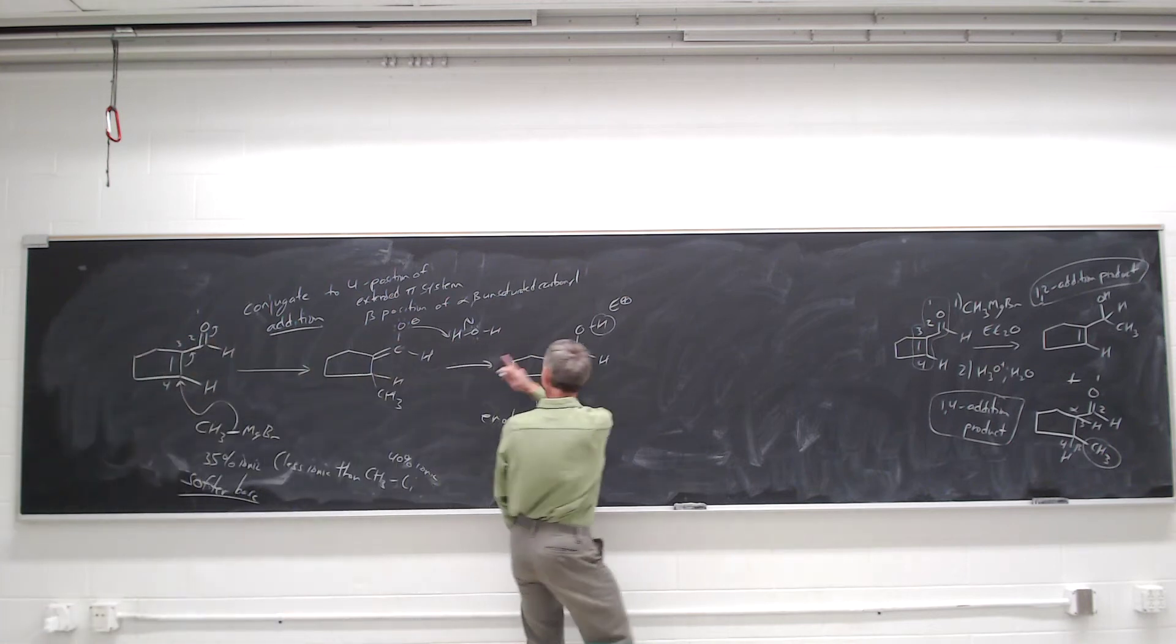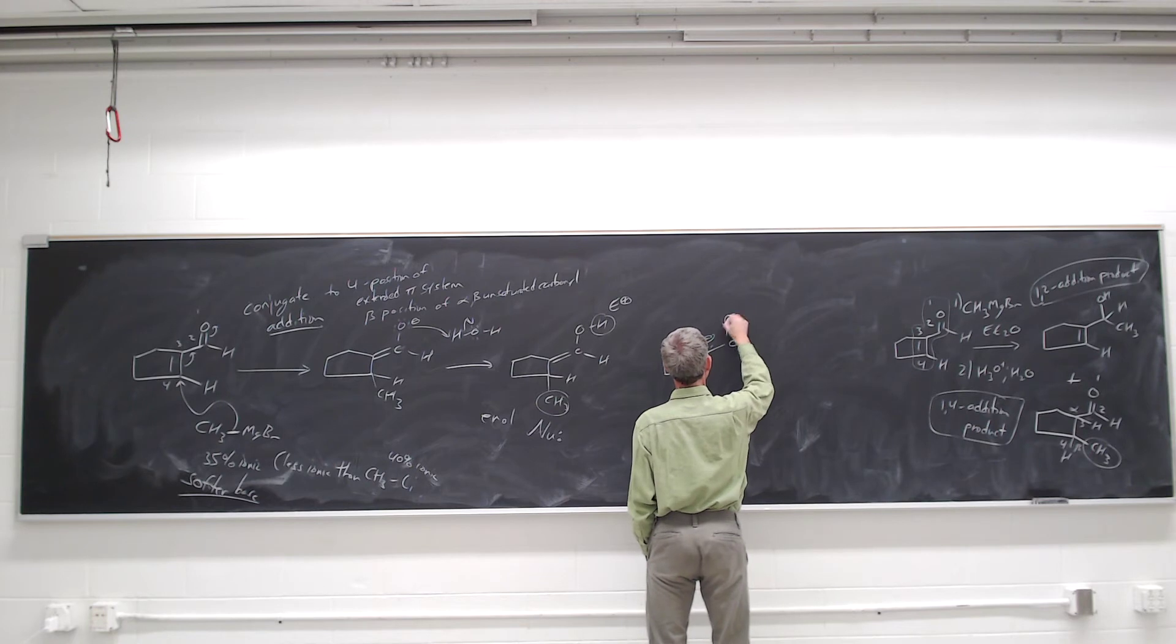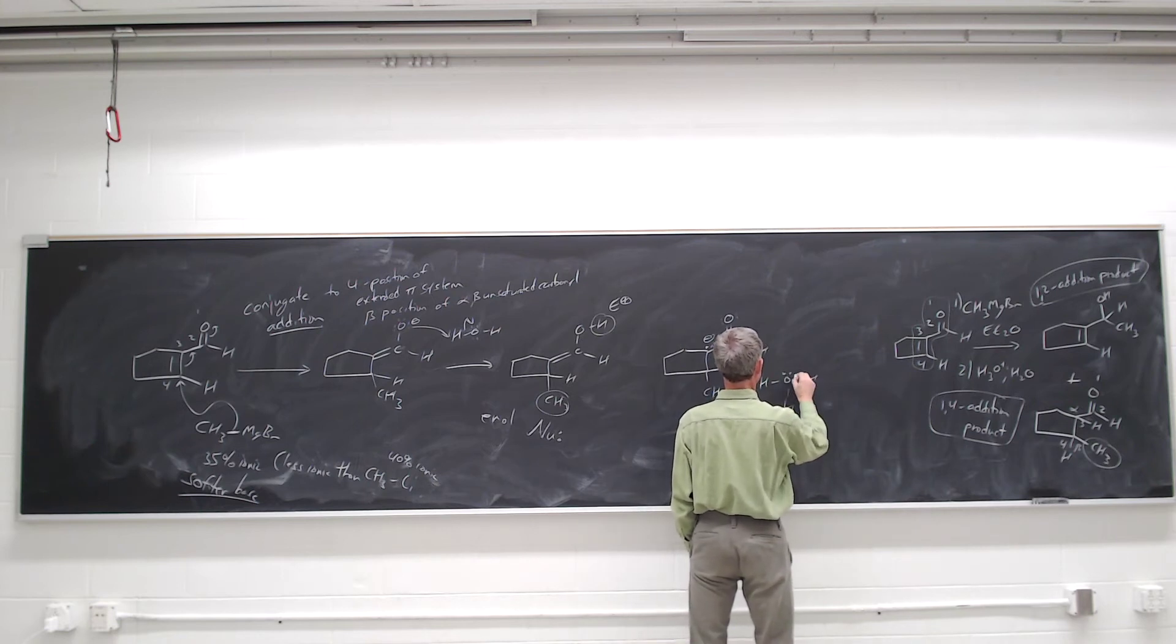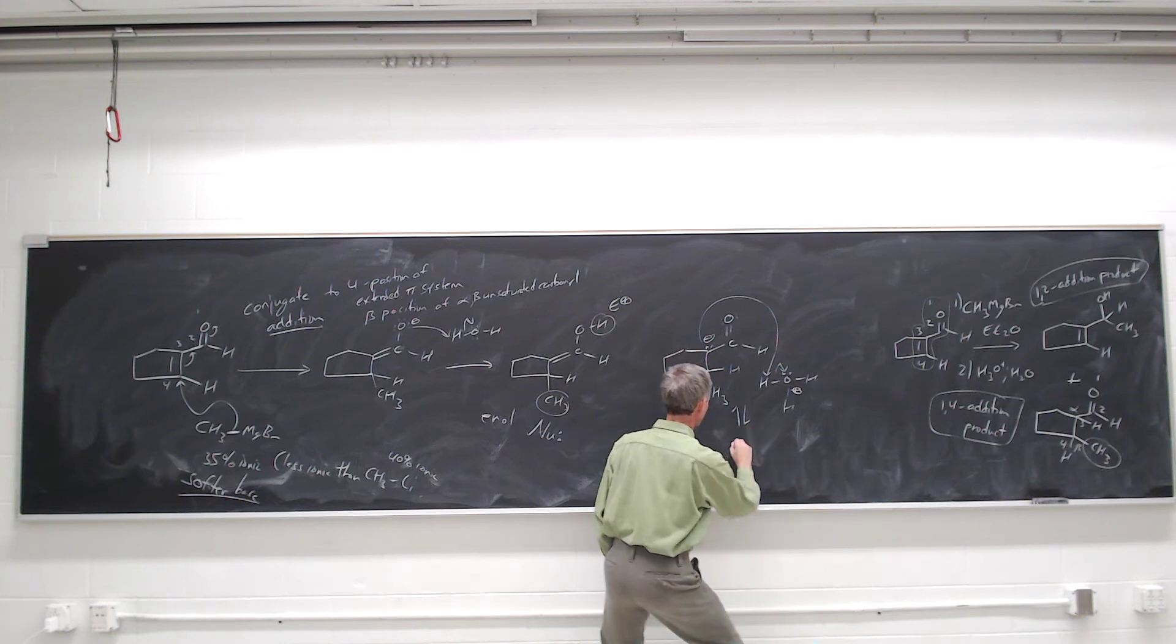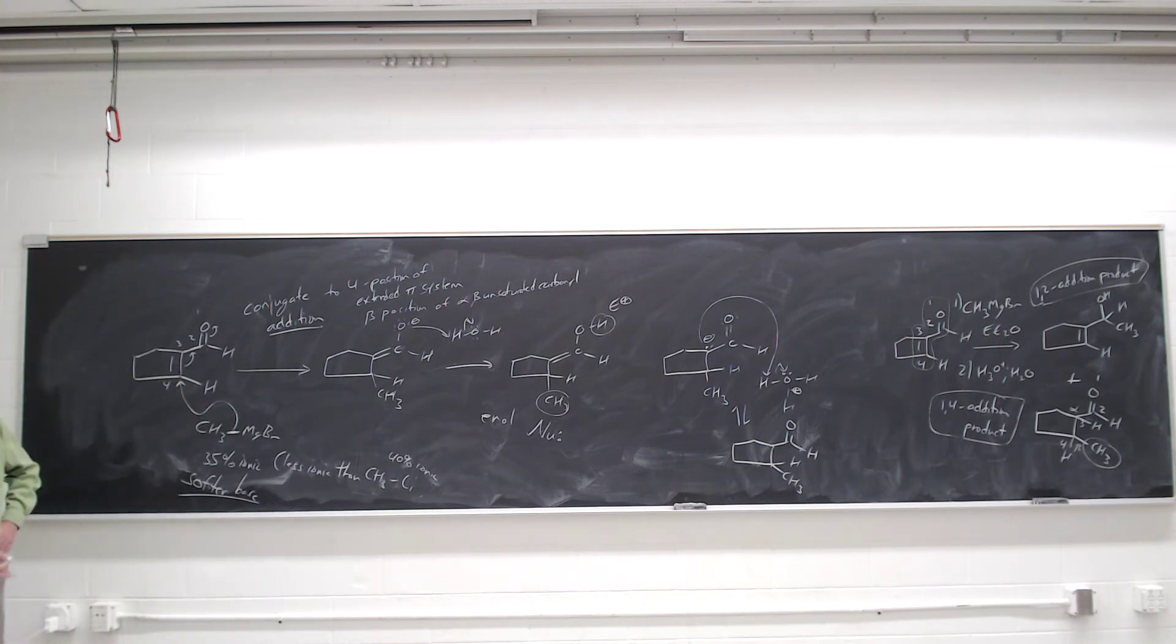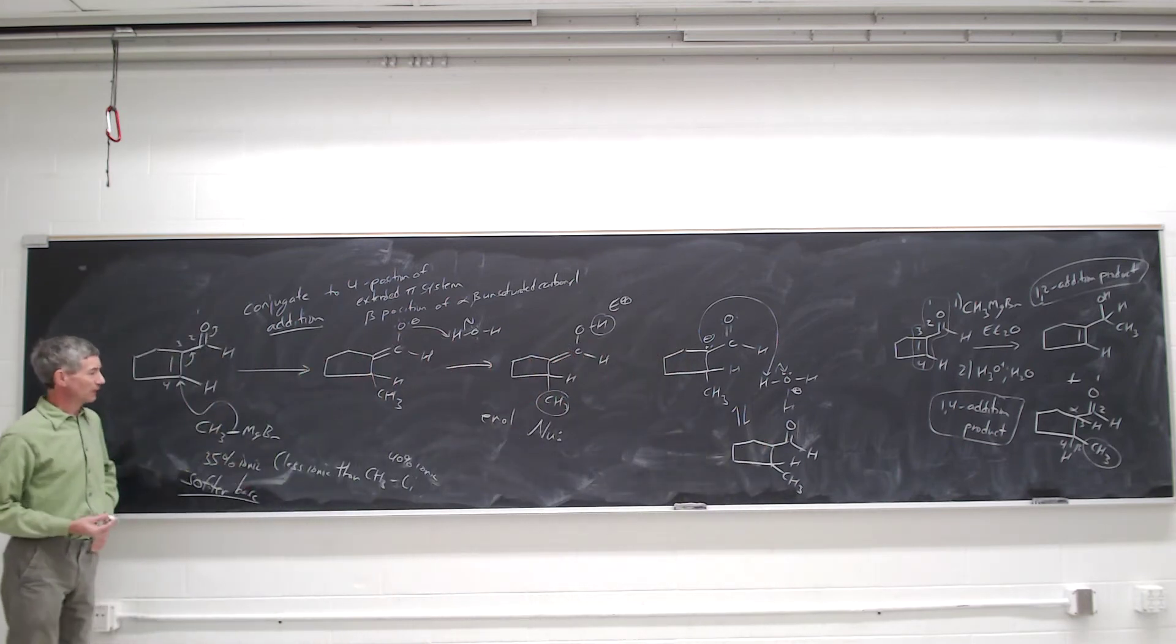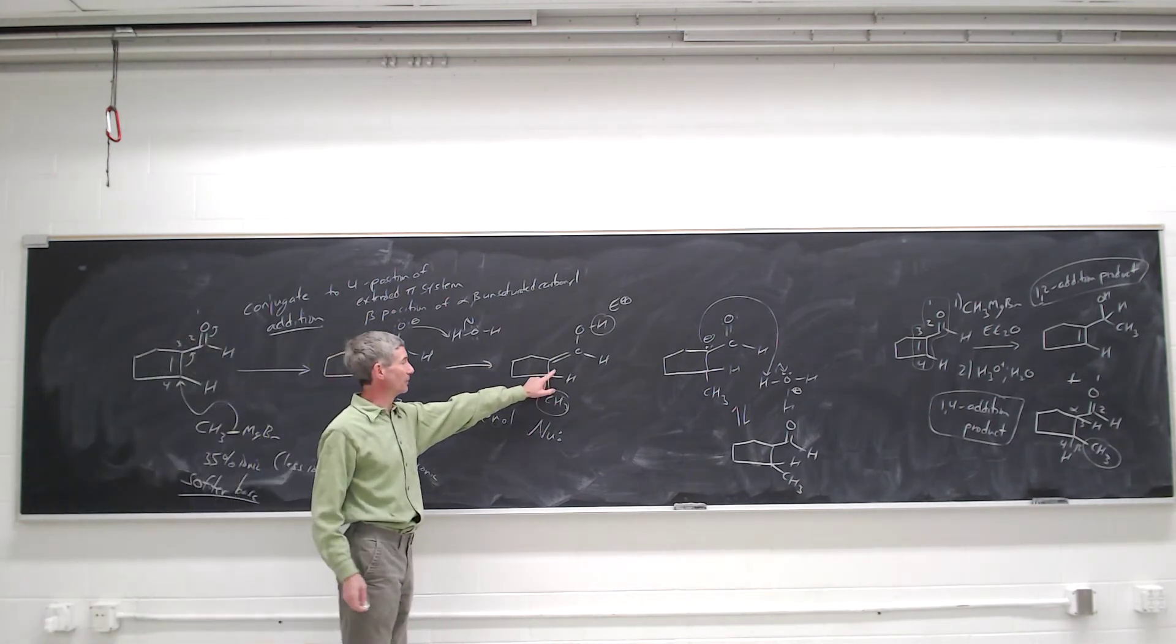But keep in mind that there is a resonance structure for that enolate that actually has a negative charge on the alpha carbon. And if we were to protonate that resonance structure instead, we would generate the actual carbonyl product. So this is a conjugate addition - it's a nucleophilic attack at the beta position, and then a protonation at perhaps the enol or the enolate, if you make an enol.